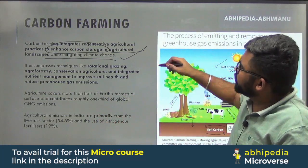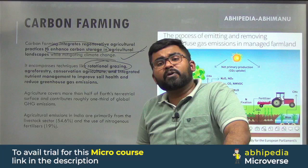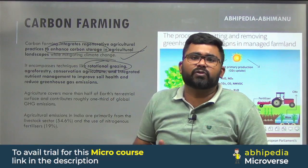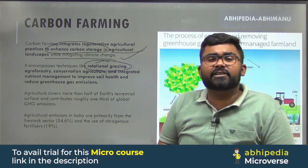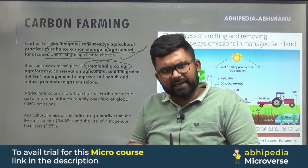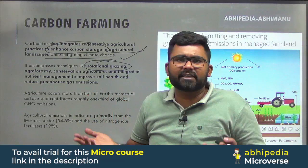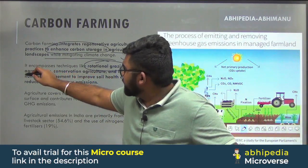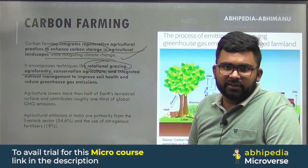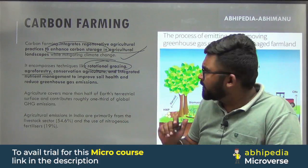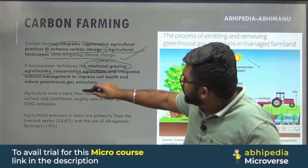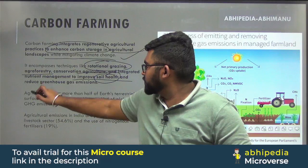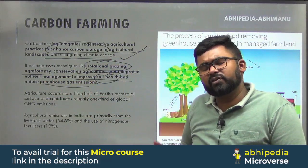Carbon farming encompasses techniques like rotational grazing — meaning avoiding overgrazing so that carbon trapped in the soil is not released. We also have to avoid tillage, so that we do not aerate the soil and release trapped carbon dioxide. It also includes agroforestry, where agriculture and forestry are combined — forestry being the best method to sequester carbon. And conservation agriculture with integrated nutrient management to improve soil health and reduce greenhouse gas emissions.